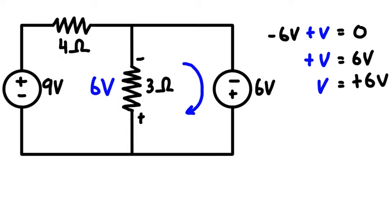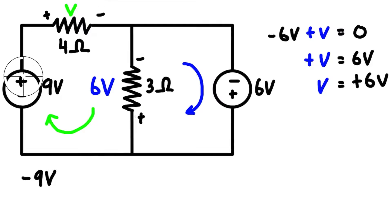Now if we want to find the voltage drop across the four-ohm resistor, we can label that as V and apply Kirchhoff's voltage law again in this loop, going clockwise. Starting at the bottom, we enter the negative terminal of the nine-volt battery, so we have negative nine volts. We need to assign a polarity to the resistor — let's guess plus and minus, as voltage tends to drop across resistors coming from the positive side. So we'll add positive V to the expression.